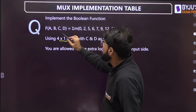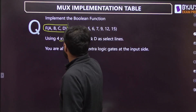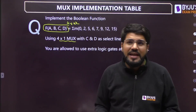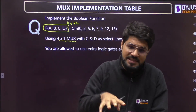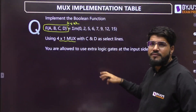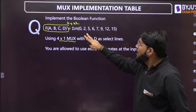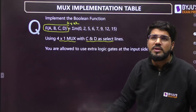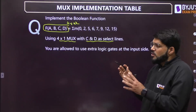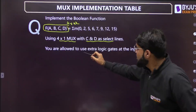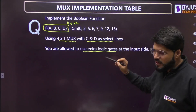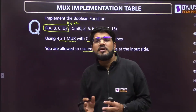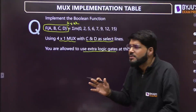Now there can also be cases where you have only a 4x1 MUX but a 4-variable function. Can I do this with the implementation table? Yes. Students usually go to the conventional approach, but here a 4x1 MUX has two select lines. C and D will be the select lines, so A and B go to the data lines. Because the number of variables is increased, extra logic gates are allowed.